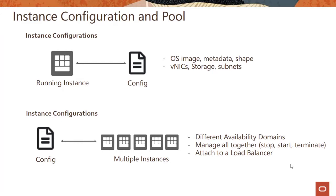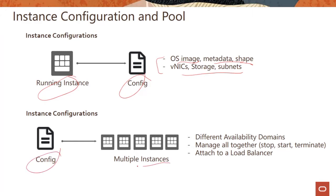First things first — what is instance configuration? As the graphic shows, you have a running instance and you can create a configuration out of it. That config contains the operating system image, metadata, shape, VNICs, networking configuration, storage, etc. With this config, it basically becomes a template and you can spin up multiple instances using that template.